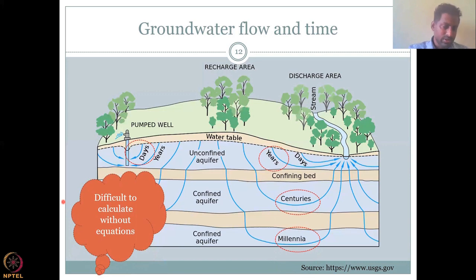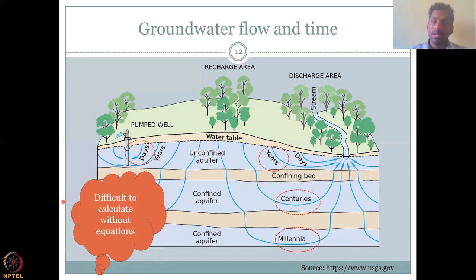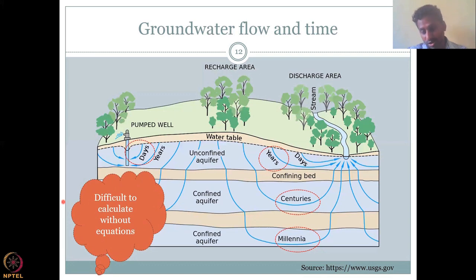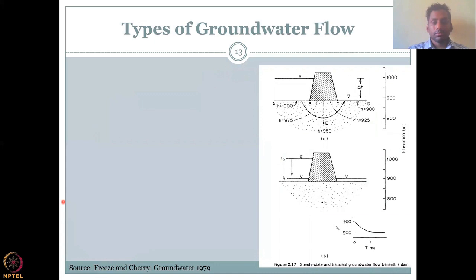So how do you estimate this? How do you estimate how the flow path would change and how the porosity and other factors would drag the water particle? Well, this cannot be done by manual calculation, but it has to go through empirical equations which have already been developed. We will see those equations when we discuss groundwater equations for confined and unconfined layers.